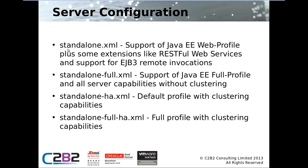There are four particular standalone XML files. There's standalone.xml, which gives you support for the Web profile plus some extensions — JBoss EAP6 is the first Java EE6 certified JBoss. Standalone-full.xml gives you the Java EE full profile and all server capabilities without clustering. Then there are two for clustering: standalone-ha.xml, which is the default profile with clustering capabilities, and standalone-full-ha.xml, which gives you the full profile with clustering.